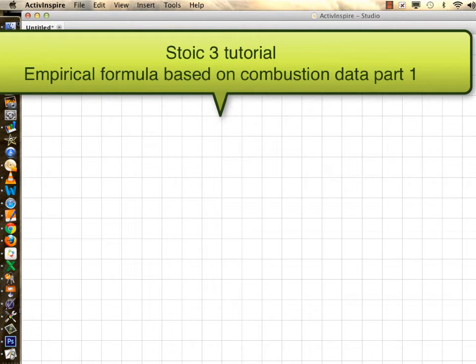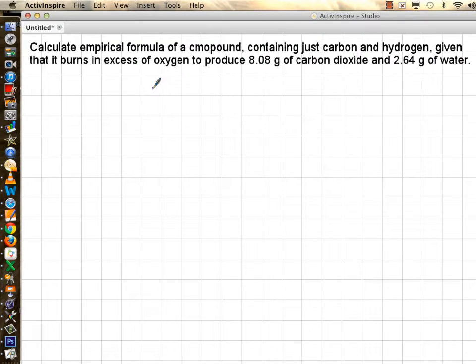In this tutorial I'm going to solve an empirical formula question based on combustion information. You have a compound that has only carbon and hydrogen and you are trying to find subscripts of X and Y. It's being combusted or burned in presence of oxygen, plenty of oxygen, excess amount of oxygen.